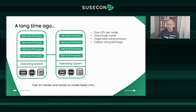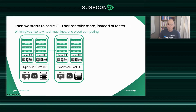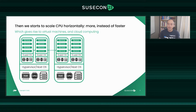Moore's Law still should apply, but instead of creating faster CPUs, we started going in other directions to increase computer performance. That's when we started to scale CPUs horizontally — creating more CPUs instead of faster CPUs. I still remember around 2007 when I joined Intel. At that time, my college professors were still talking about dual-core and single-core processors, while Intel had about 16-core processors in the lab. That was really the fascinating thing at that time.